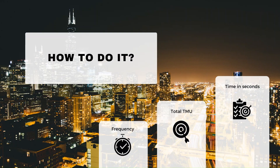Next we look at frequency — how many times the operation is repeated. The total time period is calculated in TMUs. To convert TMU to seconds, we multiply the total TMU by 0.036 seconds.